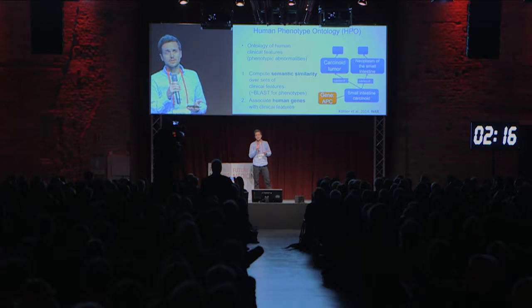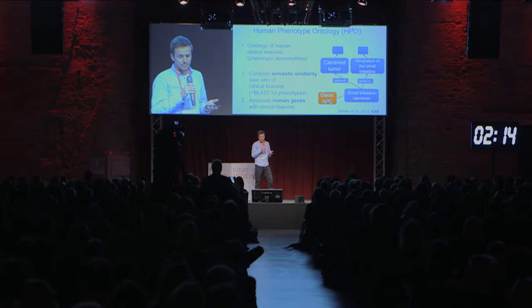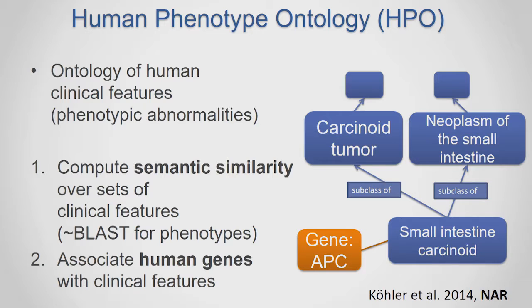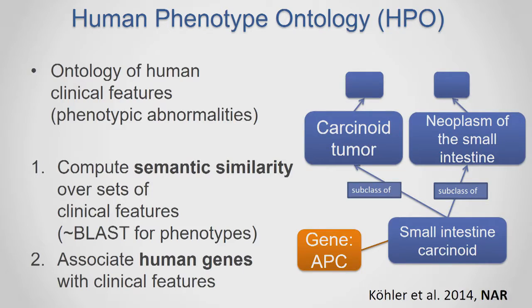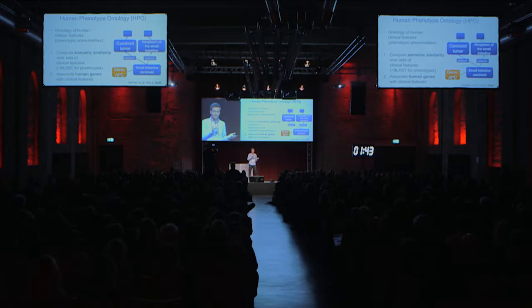The HPO has a lot of functionality, but for this short talk there are two important things I want to mention. The first is that it allows computing semantic similarity for sets of clinical features — for example, finding the most similar disease based on a patient's clinical features. The second is that it allows associating human genes with individual clinical features. For example, the gene APC is linked to small intestine carcinoids because there is a disease caused by mutations in APC where patients do have small intestine carcinoids.